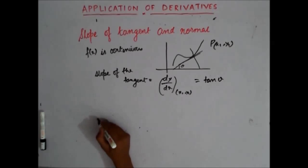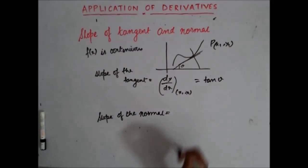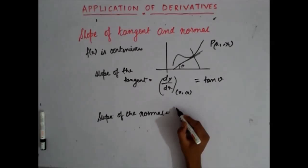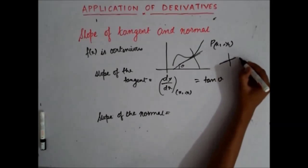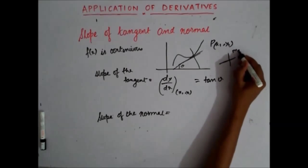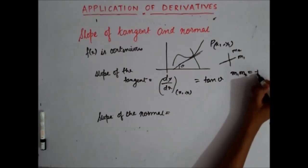Now, what is the slope of the normal? The normal is perpendicular to the tangent. Now, you know if two straight lines having slopes m1 and m2 are perpendicular to each other, the product of the slopes is equal to minus one.